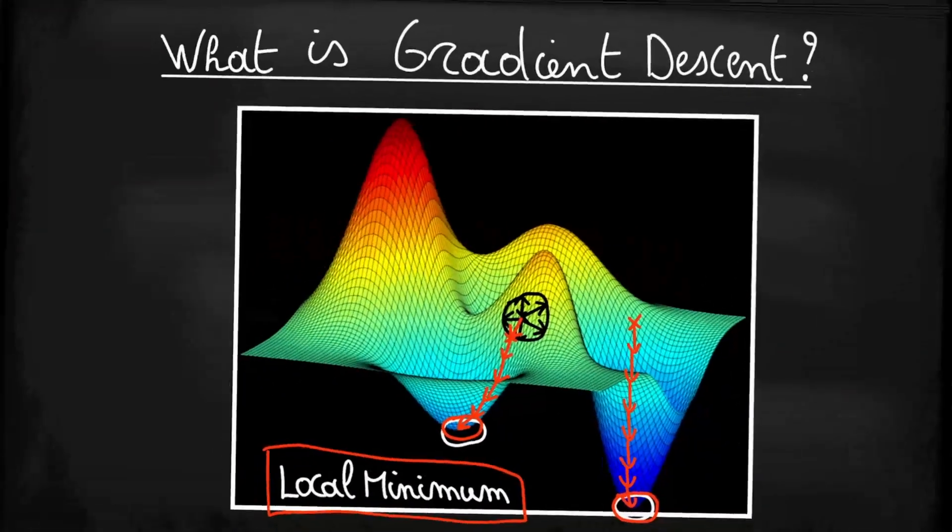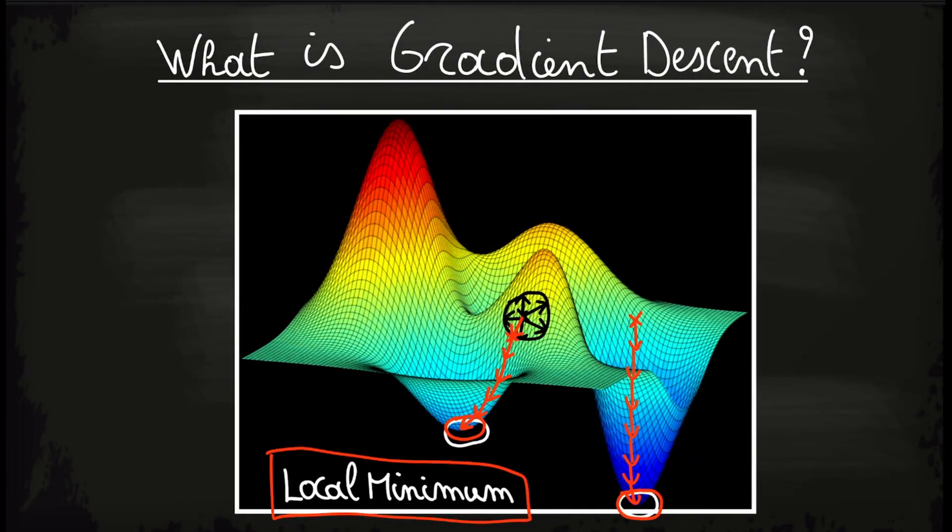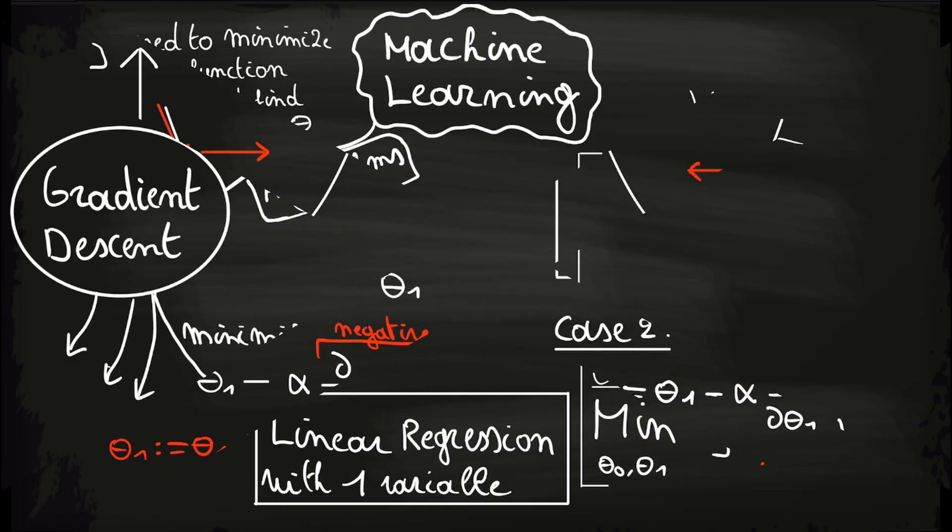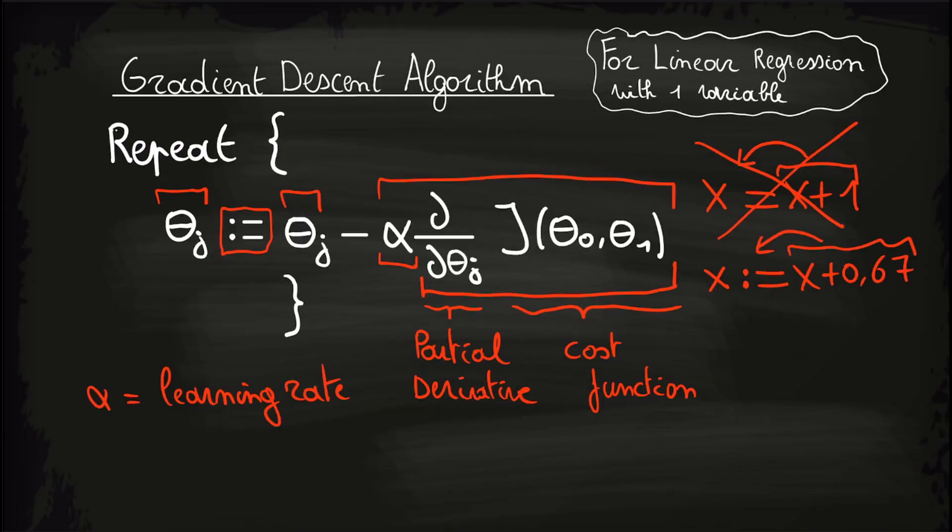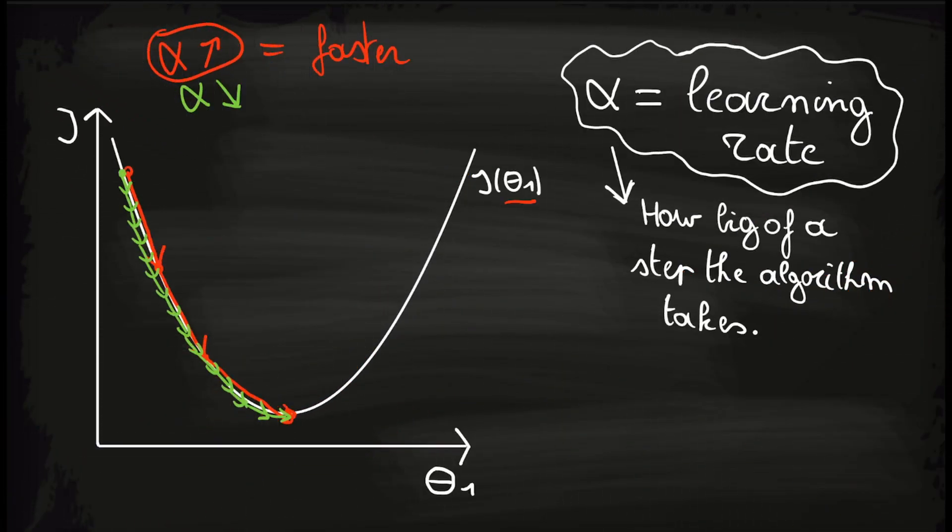In this video, we will learn about the gradient descent algorithm that is widely used in machine learning. We'll see what it does, why we need it, how it works, the mathematical formulation behind it and what this mathematical formulation actually means. So without further ado, let's dive right in.